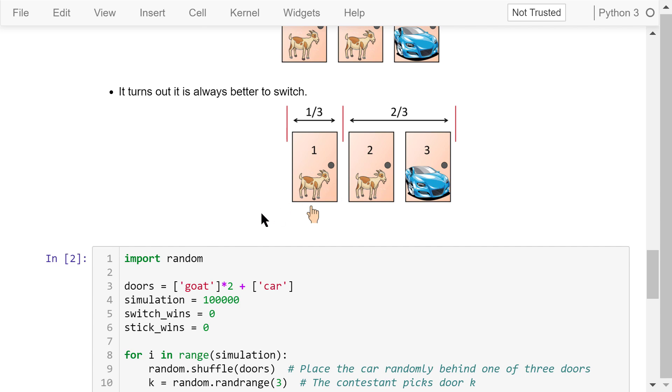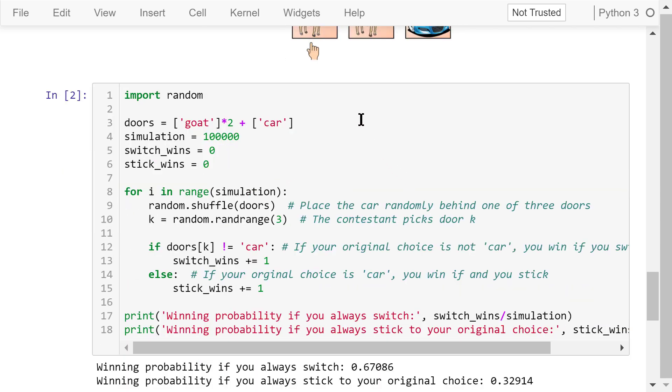We use Monte Carlo simulation to solve this problem. First, we import the random library. Then we generate a list of two goats and one car. The total number of simulation is 100,000 times. switch_wins represents how many times the contestant will win out of these 100,000 simulations if he or she always switches. stick_wins represents how many times the contestant will win if he or she always sticks to their original choice. Their initial values are both zero.